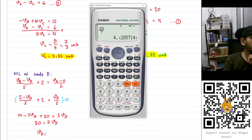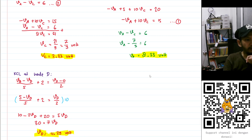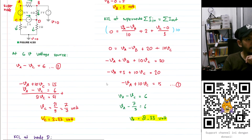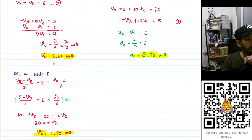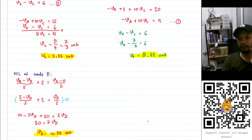So to summarize: VA is approximately 8.33 volts, VB is 5 volts, VC is 2.33 volts, and VD is 4.29 volts. Hopefully I didn't make any mistakes in my calculation. Thank you for watching and see you in the next video, bye bye.